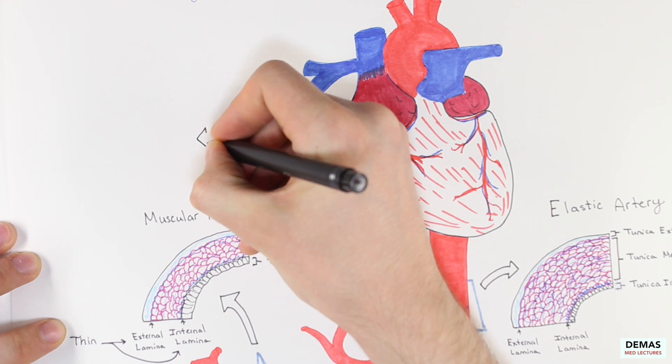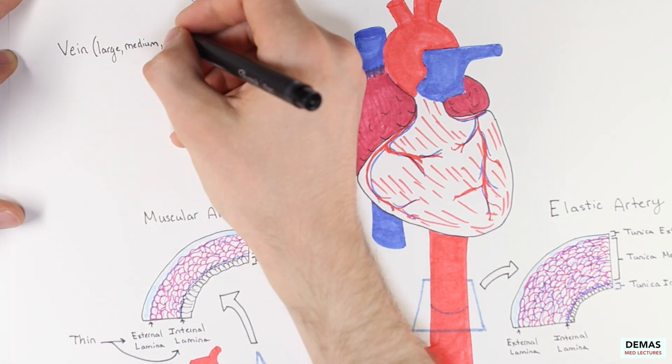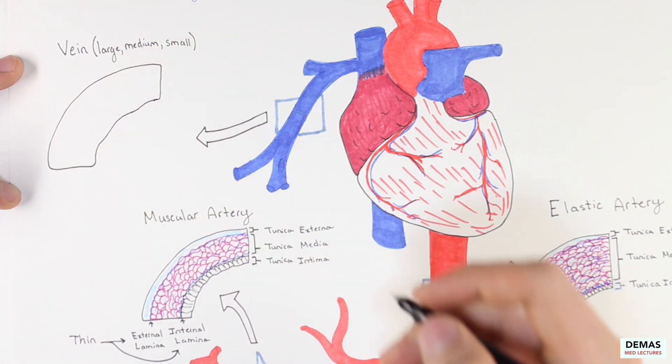Veins however still contain the three tunica layers as mentioned previously. This depiction of veins will be applicable for all of the vein sizes, and I will therefore discuss all veins together.